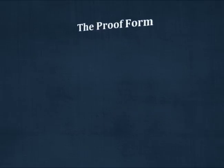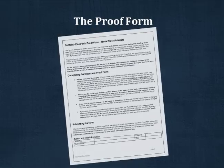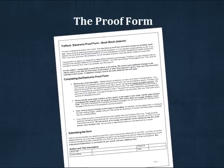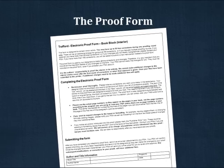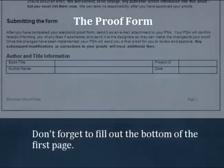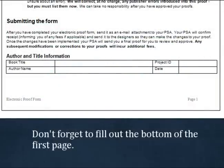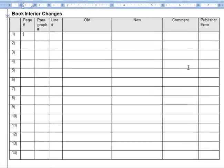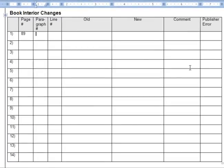Filling out the proof form correctly will ensure your corrections are completed accurately and as quickly as possible. Here are some tips and guidelines to use while completing the form. At the bottom of the first page, be sure to type your book's title, your name, your project ID number, and the date. On the next page, you can begin listing the changes that need to be made. You can type directly into the proof form.